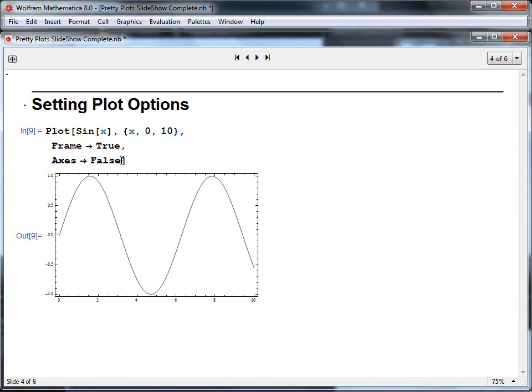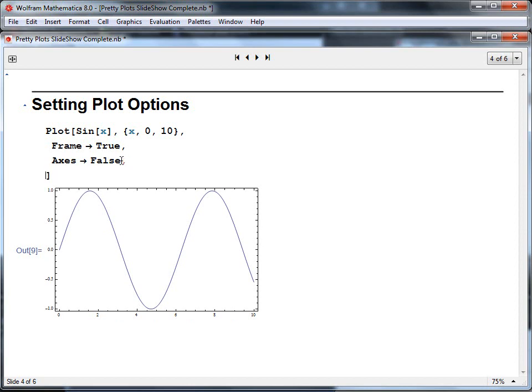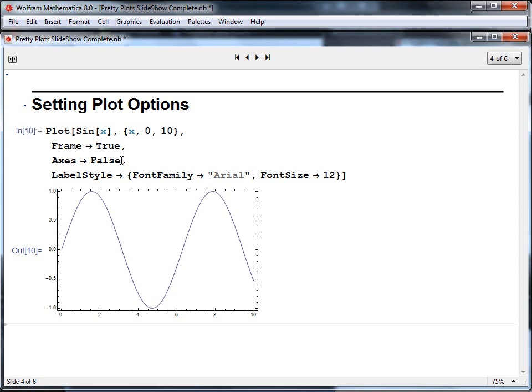Next I'd like to change the font size because I like a sans serif font, at least for viewing on the computer. And I'll do that by changing the label style, and I'm going to give it multiple style options here. So the first I'll do is to change the font. So font family dash greater than sign for the arrow, and Arial. And I'd like to change the font size to 12. And shift enter to execute.